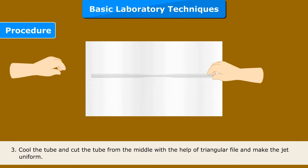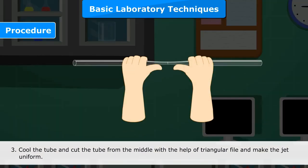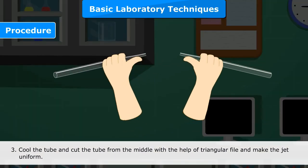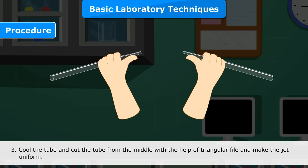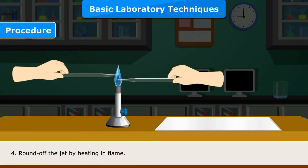3. Cool the tube and cut it from the middle with the help of a triangular file. Make the jet uniform. 4. Round off the jet by heating in the flame.